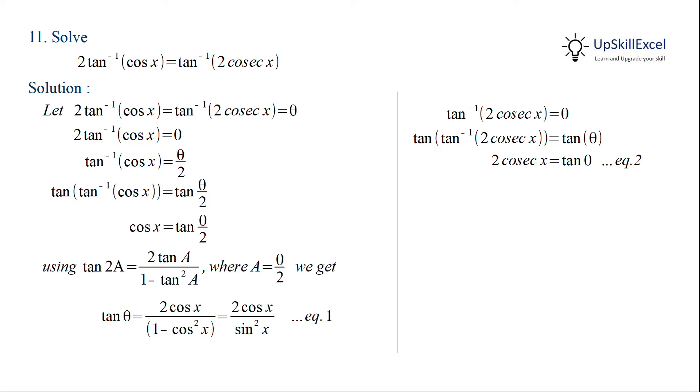Now equating both equation 1 and 2, we get 2 cos x by sine square x is equal to 2 cos x x. Simplifying this we get cos x is equal to sine x.